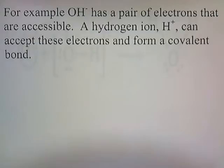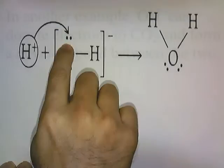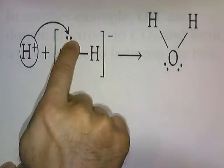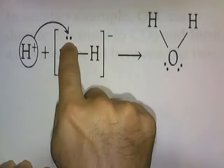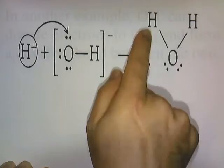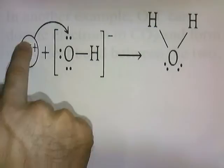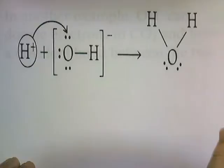For example, hydroxide has a pair of electrons that are accessible, and H+ can accept these electrons and form a covalent bond. According to the Lewis model, OH- donates electrons and is the base, while H+ accepts these electrons and is the acid. When hydroxide donates its electrons to H+, those electrons form the covalent bond between H+ and OH-, represented by the line between hydrogen and oxygen.